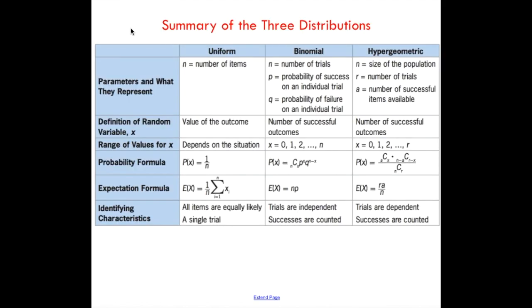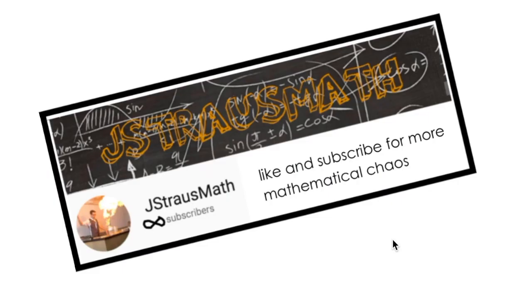One more quick thing here. This is a summary of three distributions, uniform, binomial, hypergeometric. You could argue that it gets more difficult as we go along. So definitely read through these rows and columns and make sure that you're okay with the key characteristics of each distribution. If this video helped in any way, feel free to like and subscribe for more mathematical chaos. And as usual, thanks for watching.